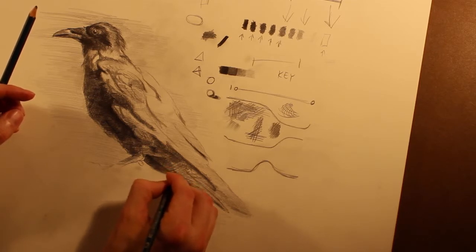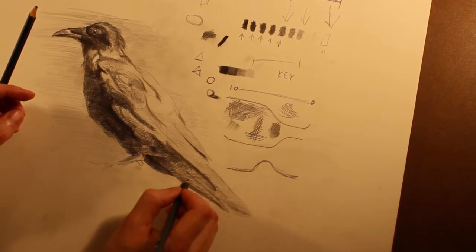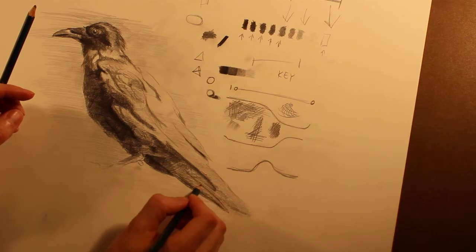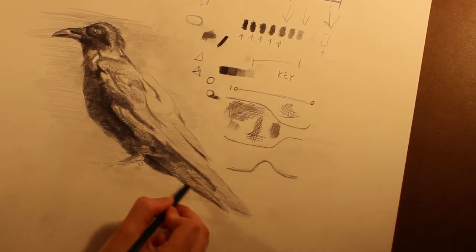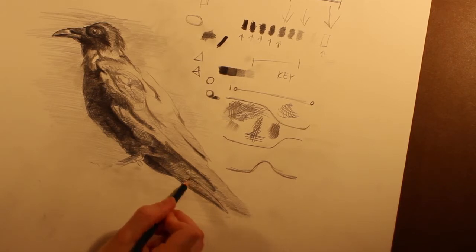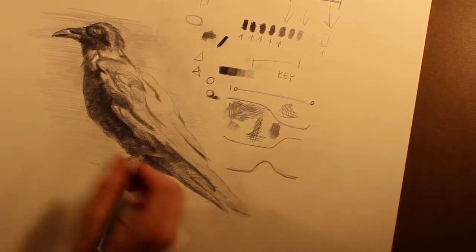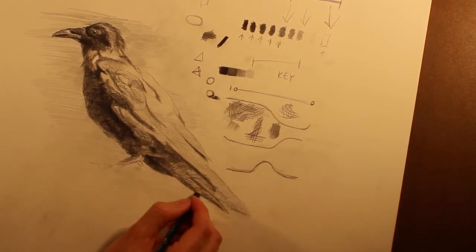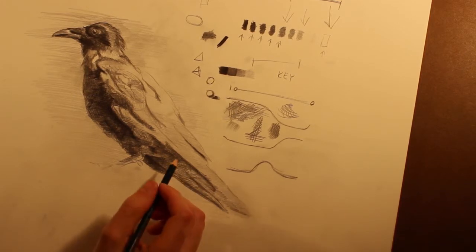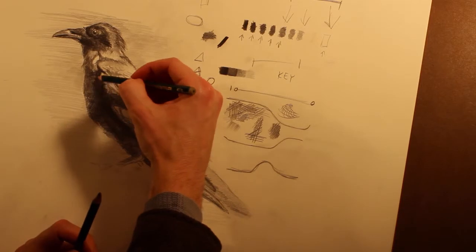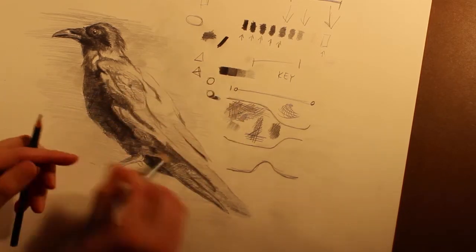So ideally what you're working on throughout this whole process is essentially creating a form in space rather than a shape on the page. Like, if I had started this drawing and just gone over the outline again and again, I'd be creating the shape of a raven and not the form of it. So it's really the forms that bring these things to life.